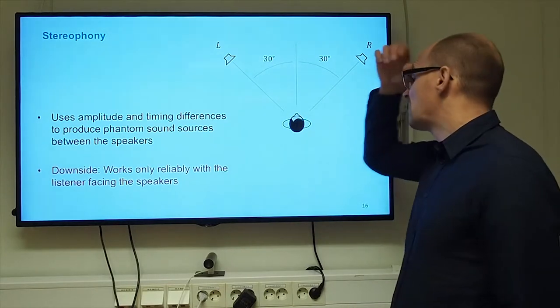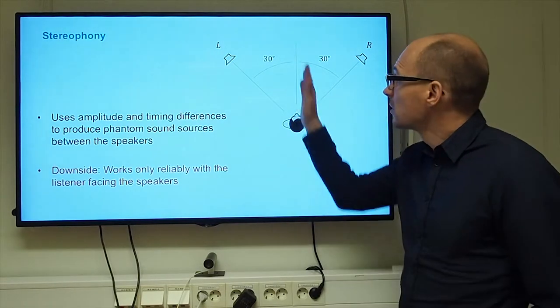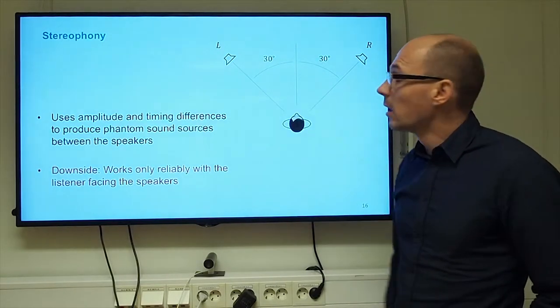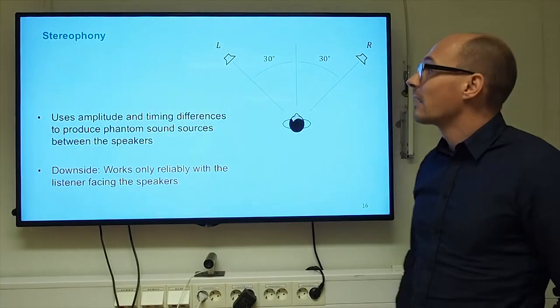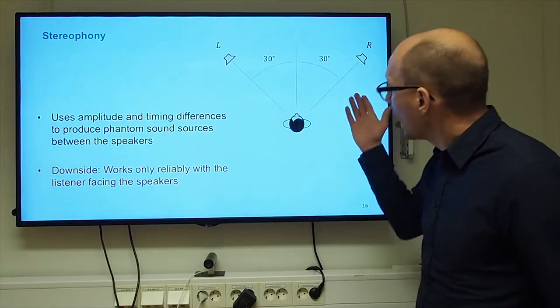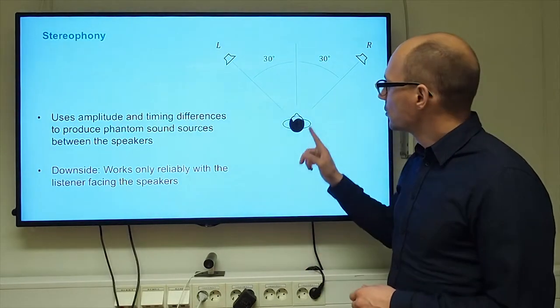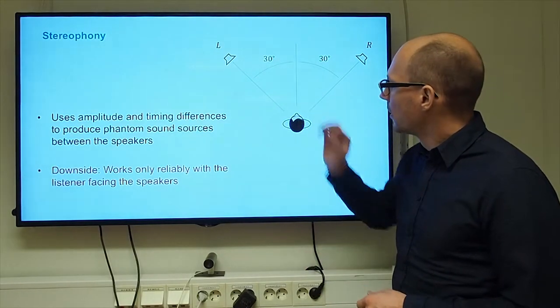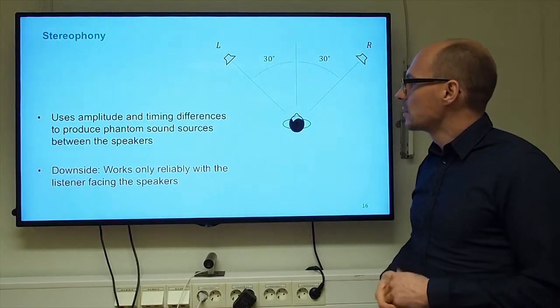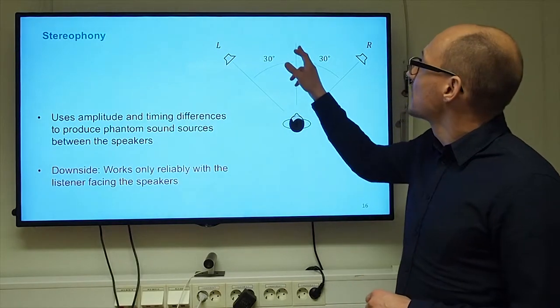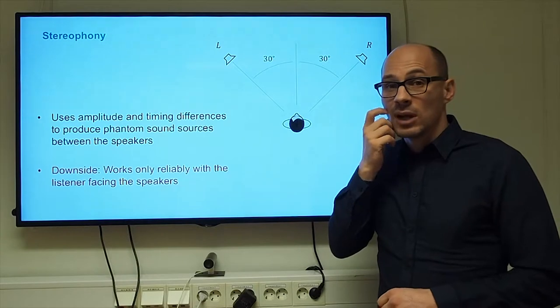The angles that are indicated here, they are not strict requirements. There's a certain range of angles that works well. And it happens so if you make both loudspeakers play the same signal, the user that is located and oriented like indicated on this plot will then hear a sound source in the middle between the two loudspeakers.